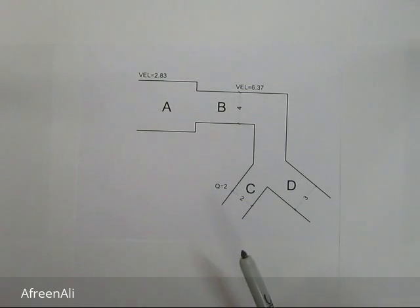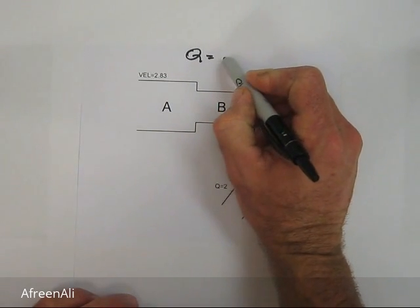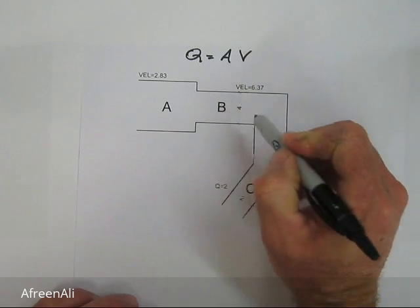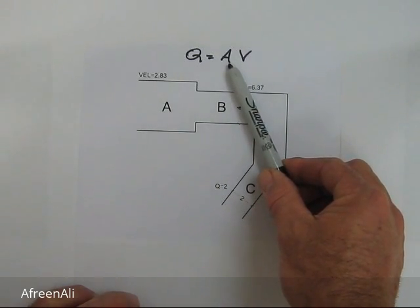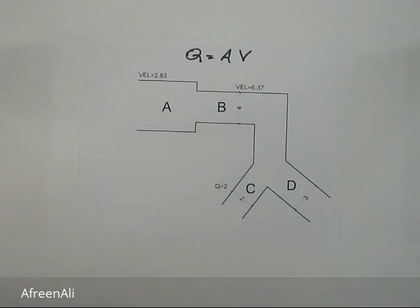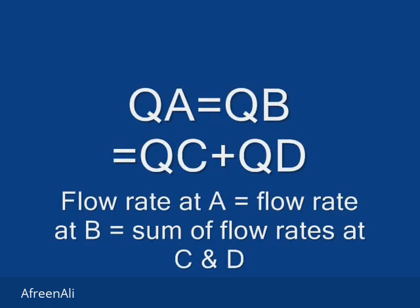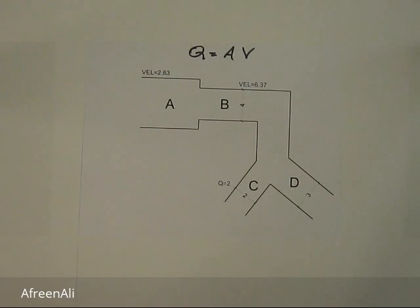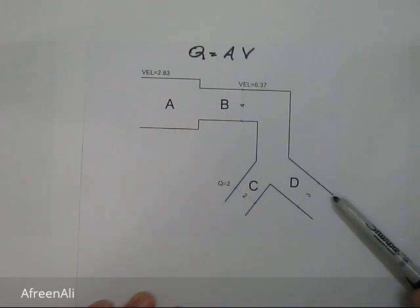The flow rate is calculated using the formula Q equals A times V, where Q is the flow rate, A is the cross-sectional area of the pipe, and V is the velocity of the fluid in the pipe. In any given system with fluid running through it, we consider the flow rate to be the same throughout the system.